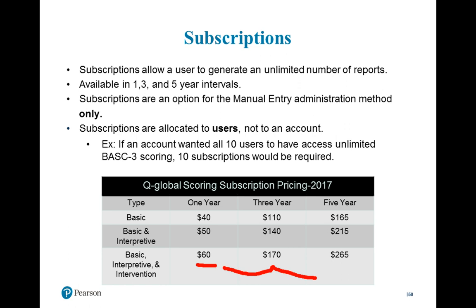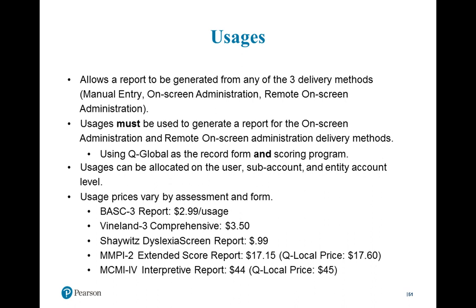Usages pricing varies depending on the assessment itself, so it's not as neatly structured as subscriptions. For example, a BASC-3 report usage would be $2.99 per report — and that covers both digital administration and scoring. The Vineland comprehensive usage is $3.50. The Shaywitz screener is $0.99. For assessments like the MMPI-2 and MCMI-4 that are on both Q-Local and Q-Global, they are going to be cheaper on Q-Global than Q-Local. And remember, the license fee doesn't exist for Q-Global.